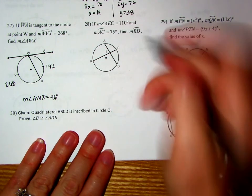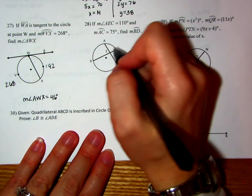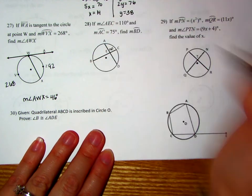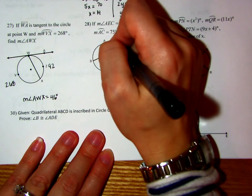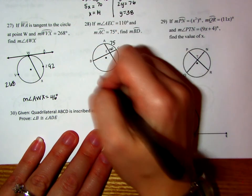On number 28, we're told that angle AEC is 110 degrees. We're told that arc AC is 75 degrees. And we're supposed to find BD, which I'm going to call X.